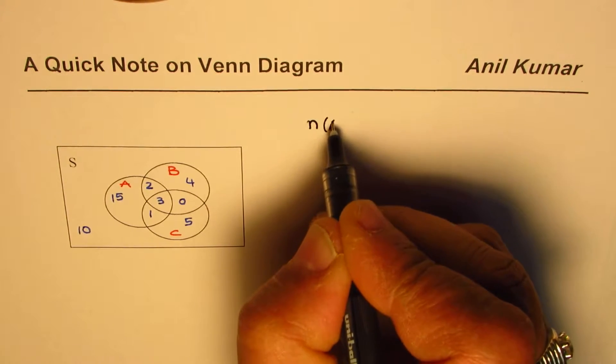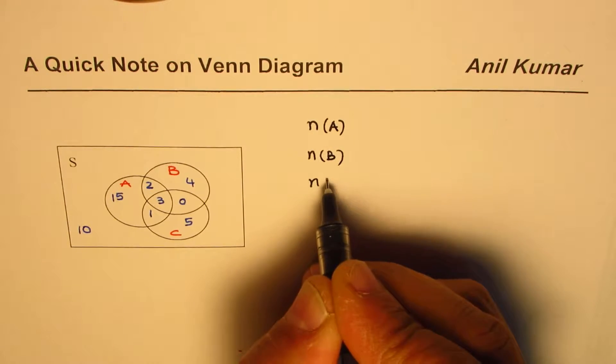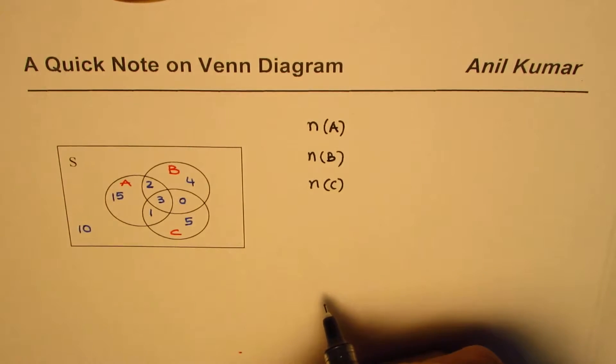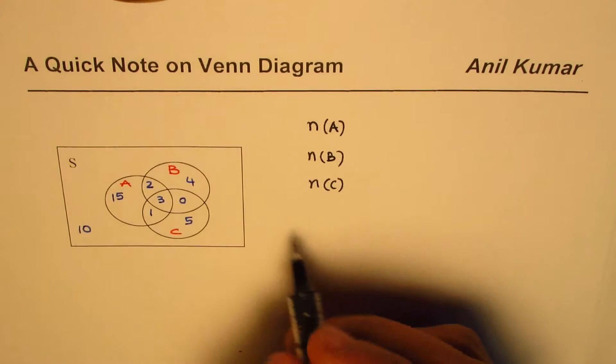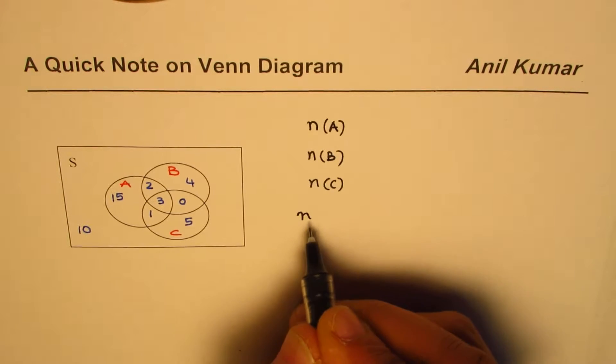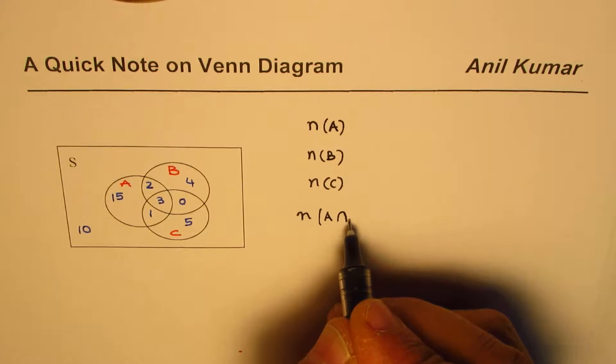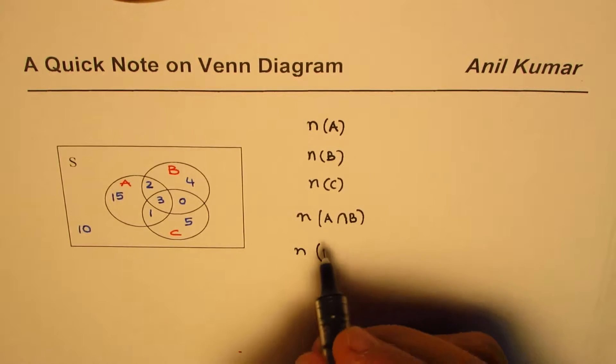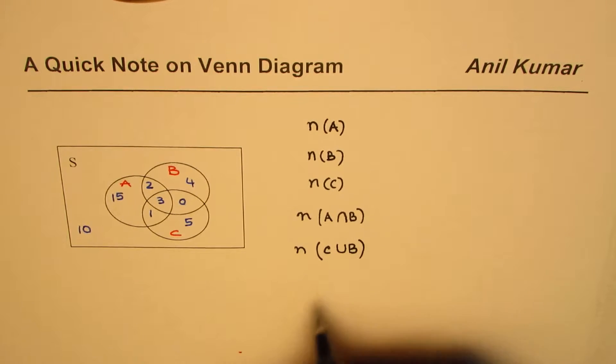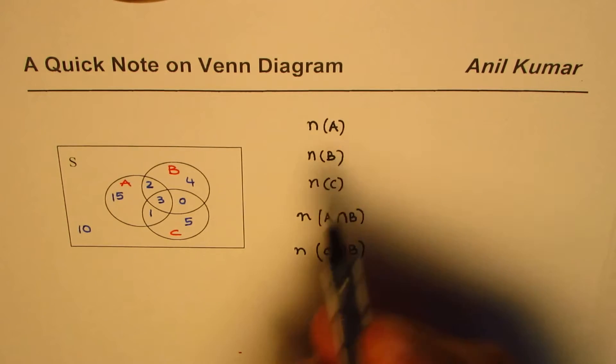We can find the number of elements in A, the number of elements in B, the number of elements in C. We can find the number of elements in the intersection of these sets, for example the intersection of A and B. We can also find the number of elements in a union, let's say C union B.